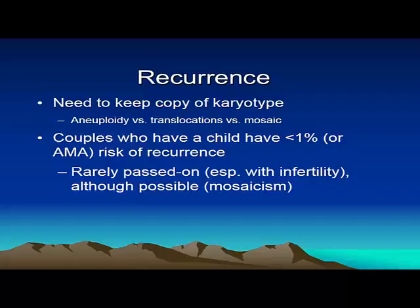To touch on recurrence risk for X and Y chromosome variations: I always encourage families to keep a copy of the karyotype or the lab report making the diagnosis, because counseling is very different when a child has an aneuploidy — an entire extra X or Y chromosome — versus a translocation or mosaicism. Couples who have a child with an X and Y aneuploidy have approximately a 1% risk, or the risk associated with the mother's age, of having another child with an aneuploidy. Individuals with an X and Y aneuploidy have approximately a 3% to 15% risk of having a child with an X and Y aneuploidy, depending on the condition and the study cited.